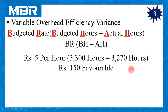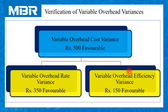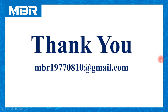Now let us verify all three variable overhead variances using their relationships. Variable overhead cost variance: rupees 500 favorable. Variable overhead rate variance: rupees 350 favorable. Variable overhead efficiency variance: rupees 150 favorable. If all calculations are correct, they match each other automatically (350 + 150 = 500). I hope everybody is clear. Thank you. Keep watching the next sessions. God bless you. Keep learning, keep growing.